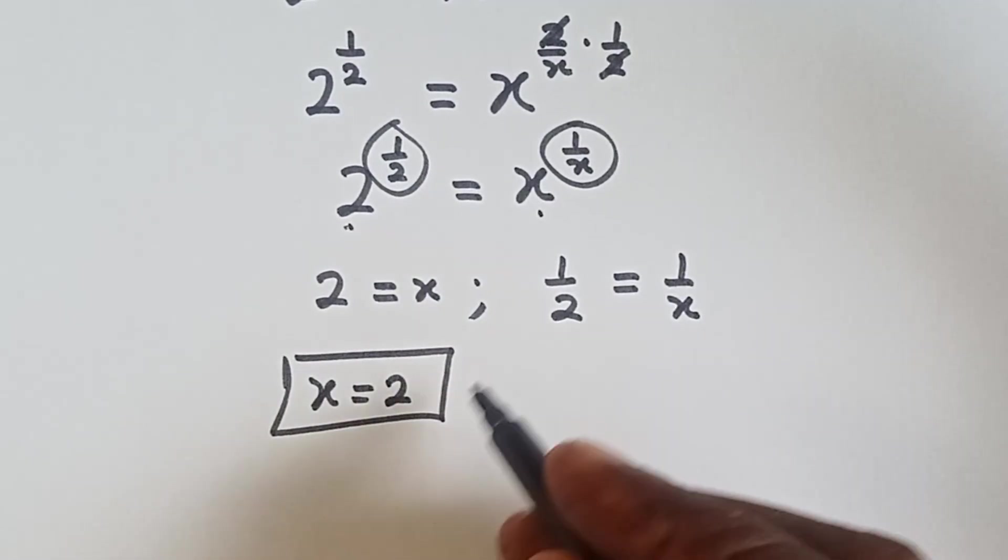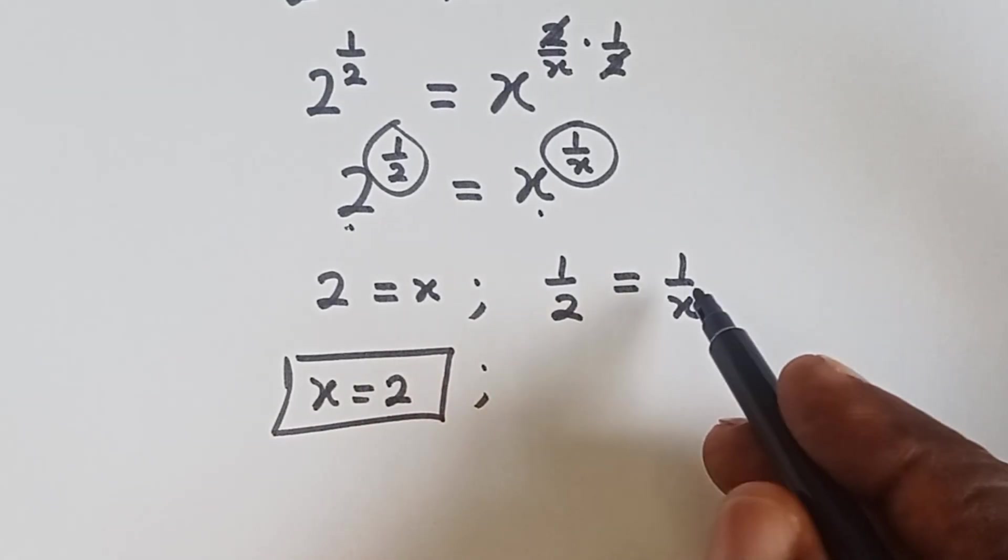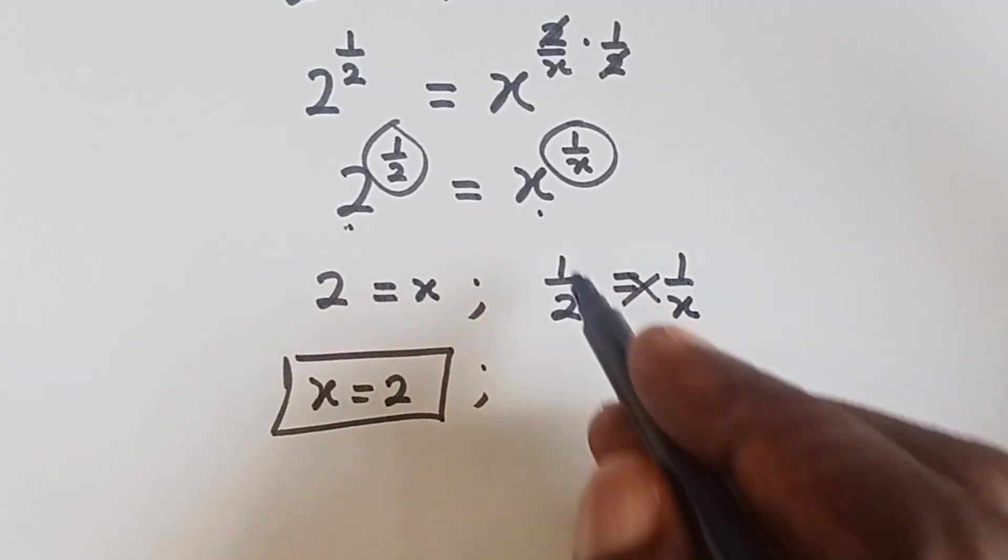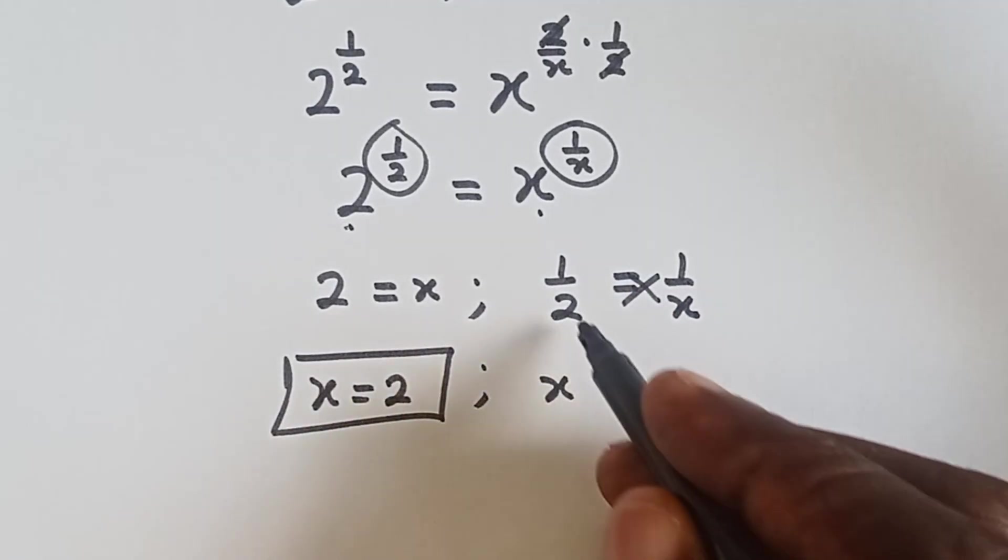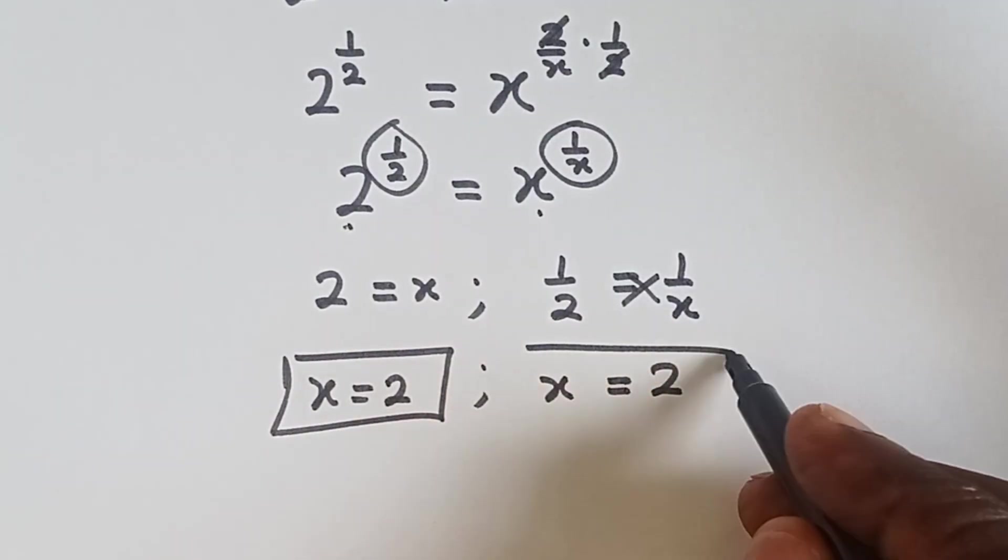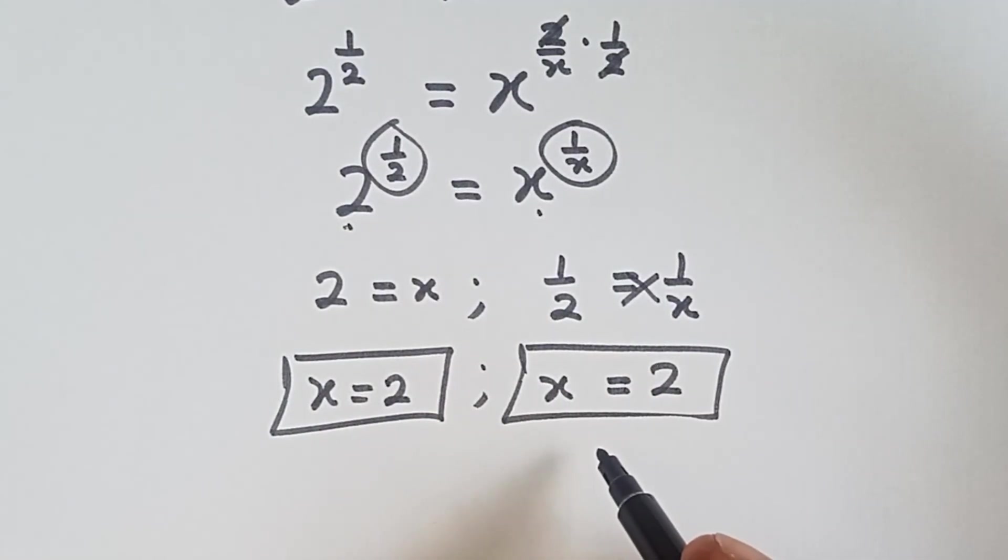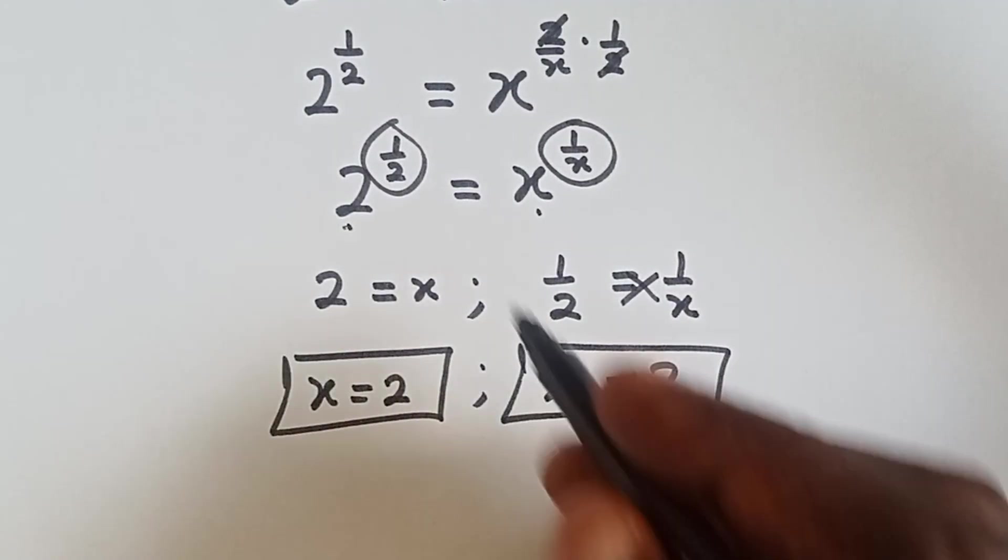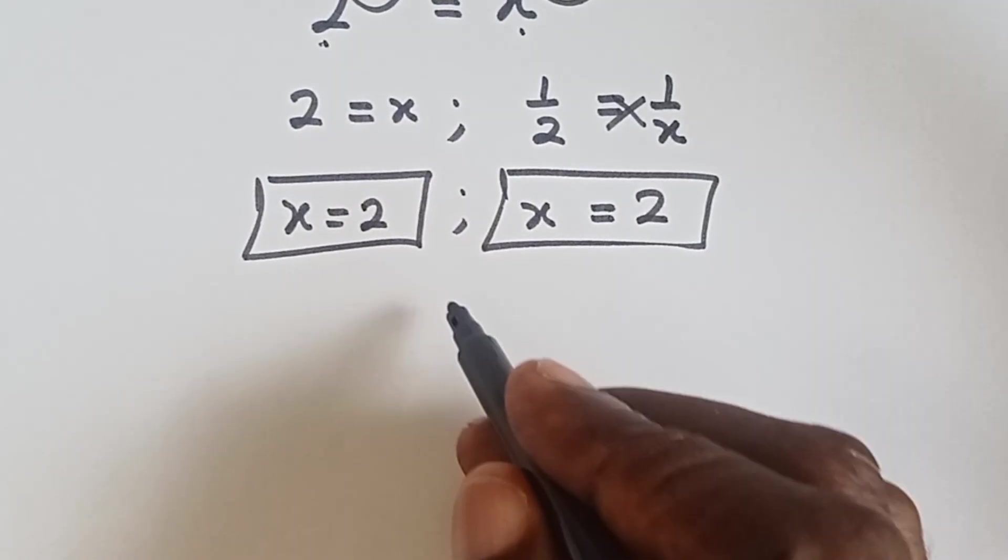Let's say that as one of our solutions and then here we cross multiply and we have x times 1 is x and 2 times 1 is 2. So x is also 2 here. So that means that x equals to 2. Now let's check real quick to see if we are correct.